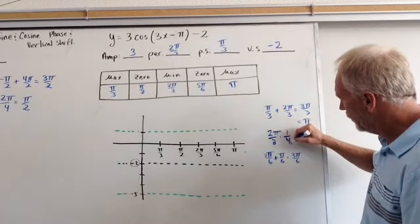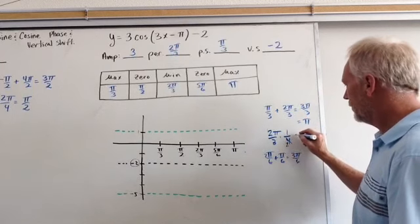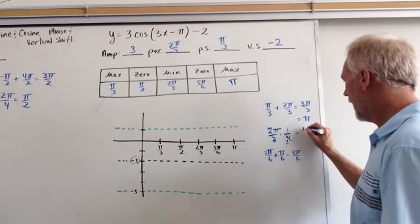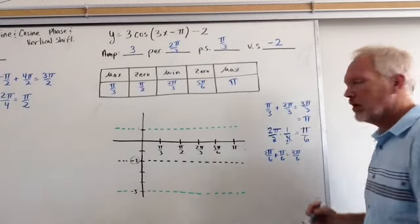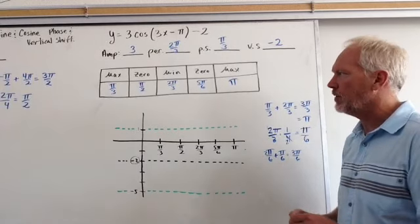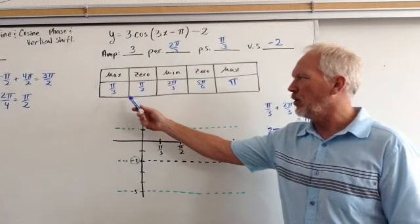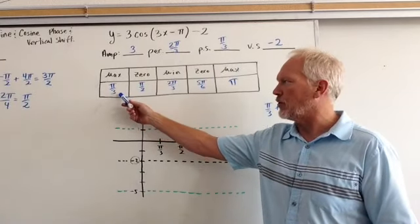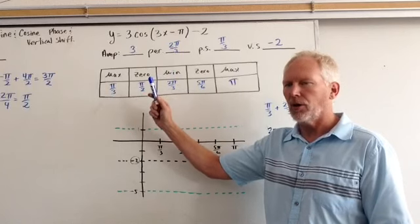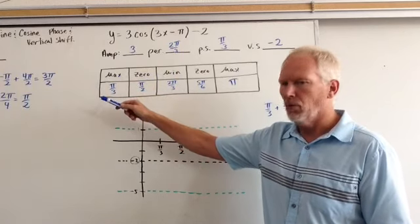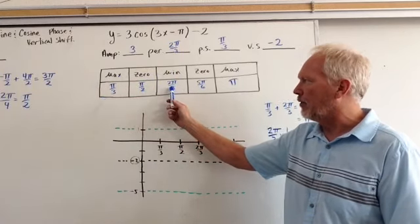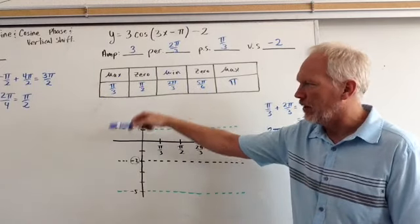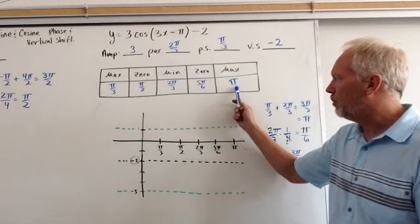If I take 2 pi over 3 times 1 fourth, I simplify the 2 and the 4, so we get pi over 6. I've got a pi over 6 adjustment to each one of these. Pi over 6 is 30 degrees. If I start at pi over 3, 30 more degrees is pi over 2, 30 more is 2 pi over 3, another pi over 6 is 5 pi over 6, and finally I get to pi.